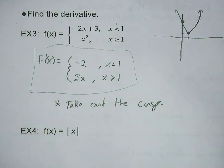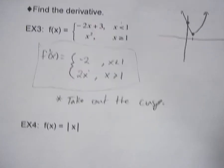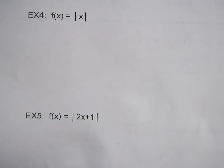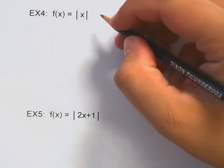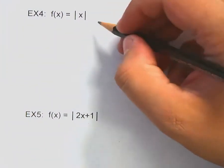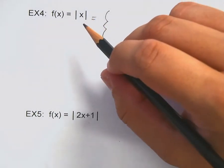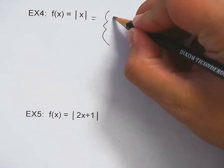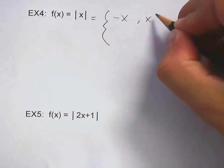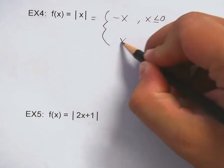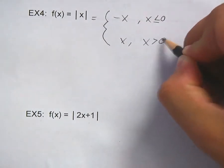Example number four: the absolute value of x. First, turn this into a piecewise function. The absolute value of x — where's the dividing line? Zero is going to be the dividing line. It's negative x when x is less than zero, and x when x is greater than zero.